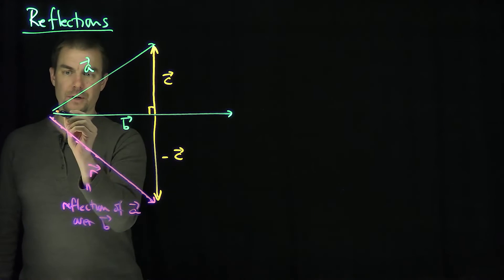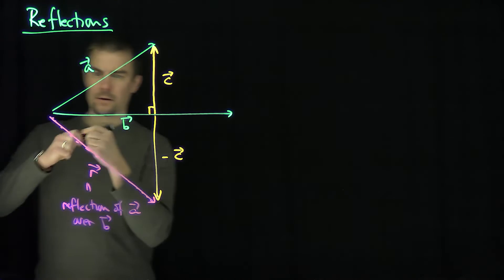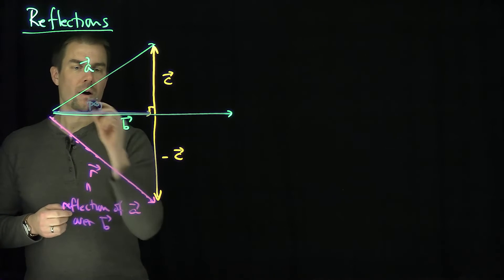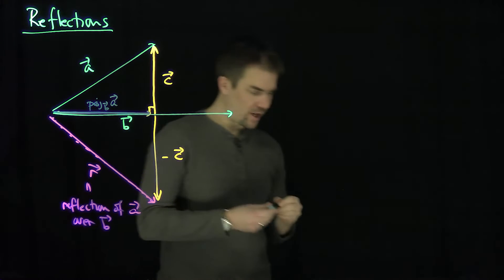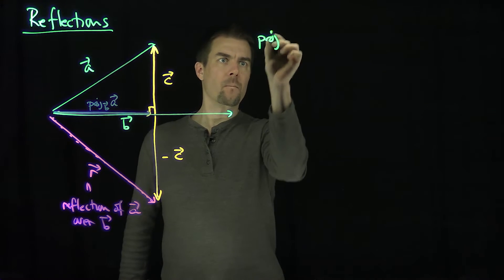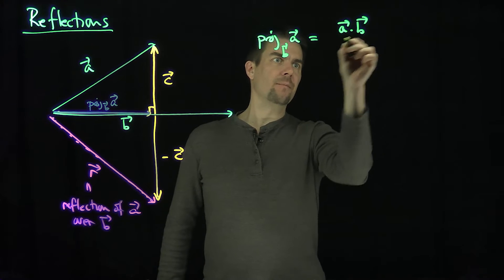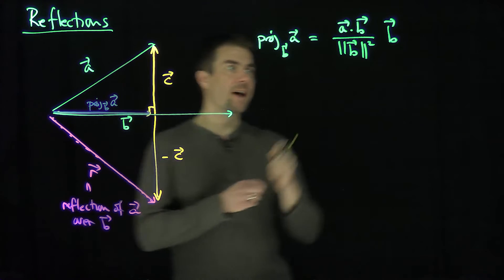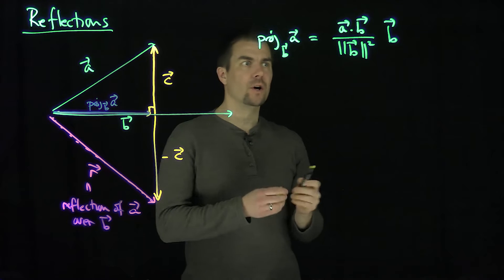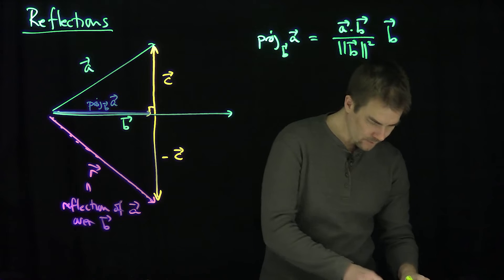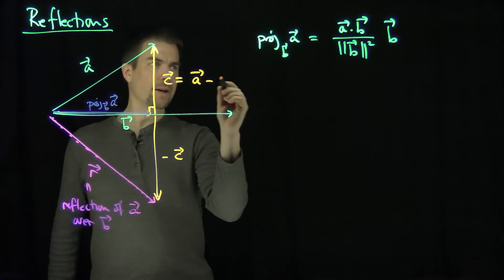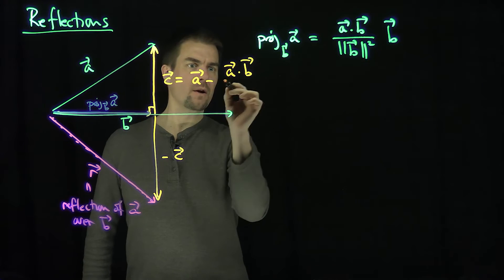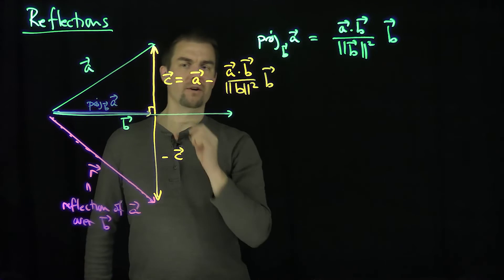We can easily do that using vector projections. If I look at the vector that goes from this origin point right over here, that's the projection of a onto b. Recall that the projection of a onto b is given by a dot b over the length of b squared, in the direction of b. That's great because c has to satisfy: projection plus c equals a. So c has to be a minus that projection — a minus a·b over the length of b squared times b. That's what the vector c is.